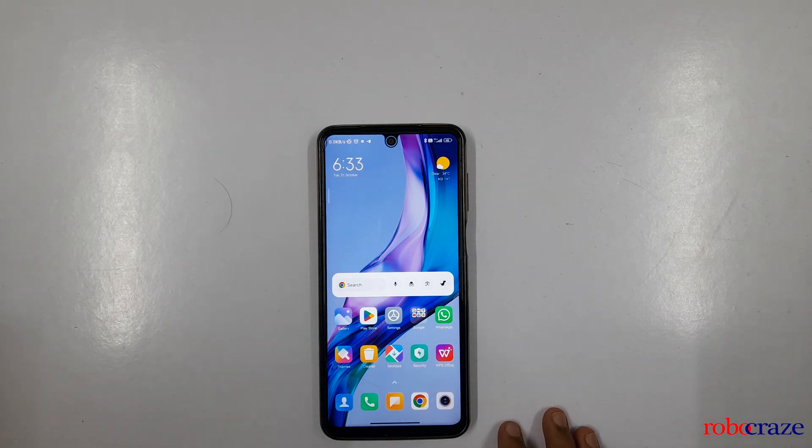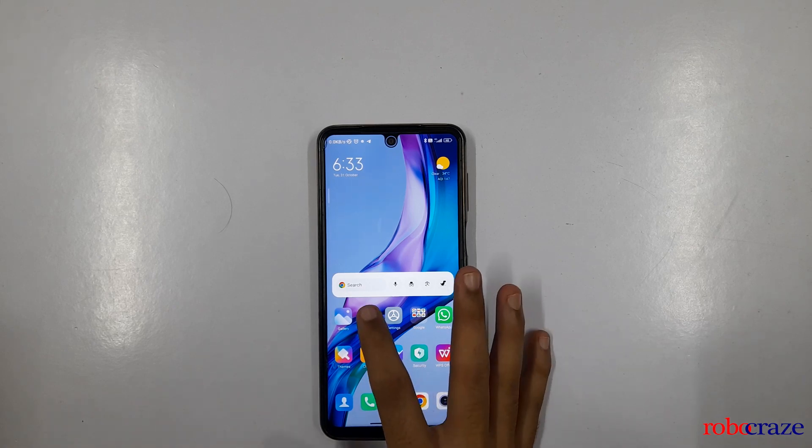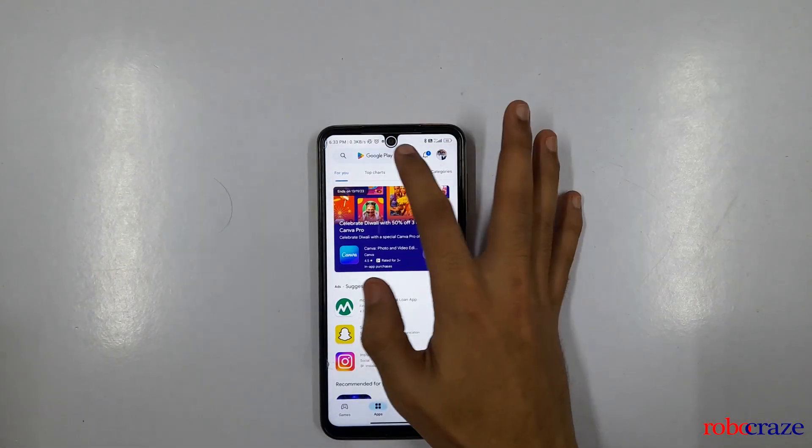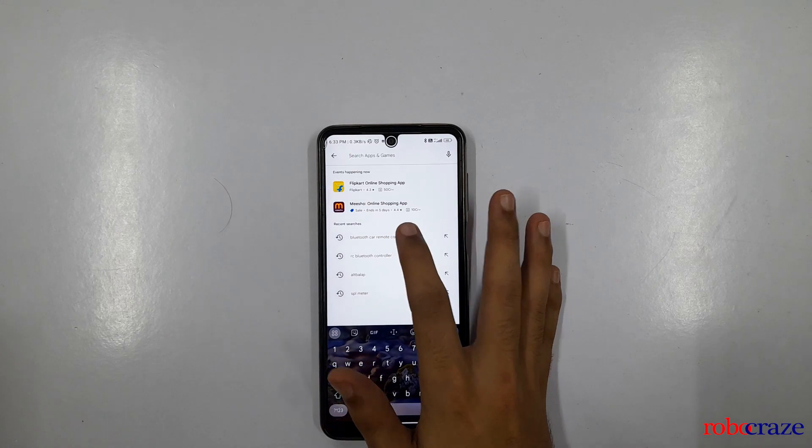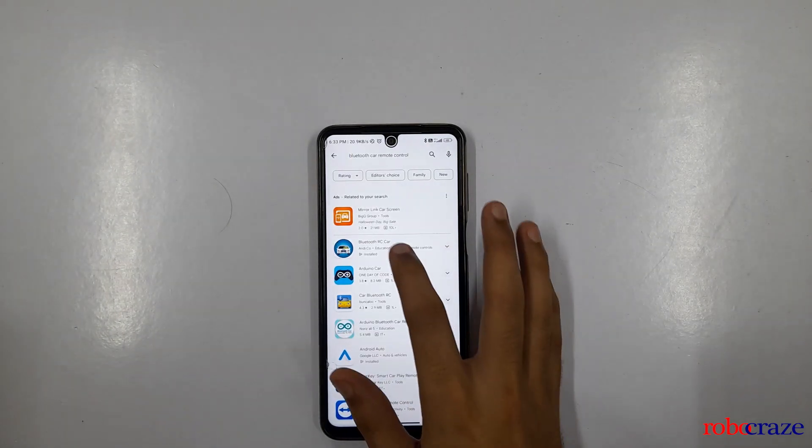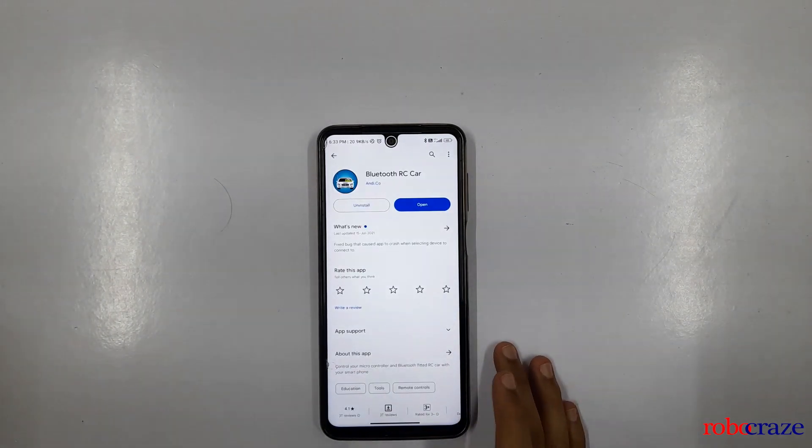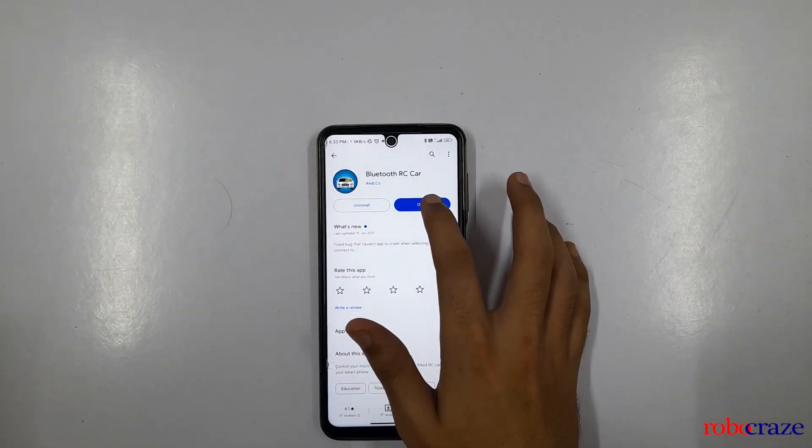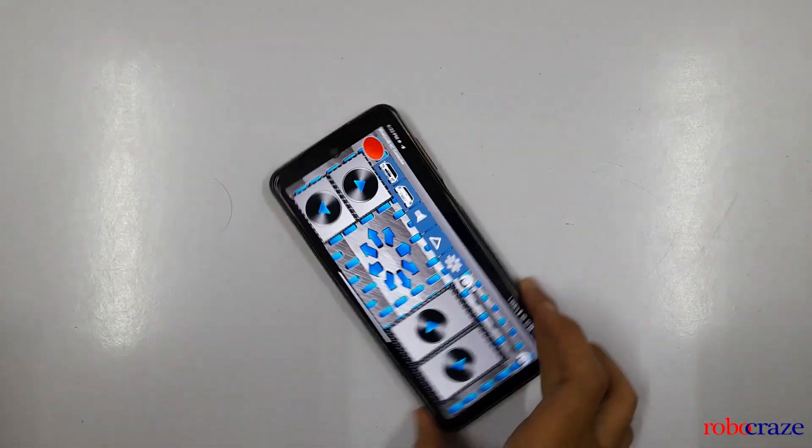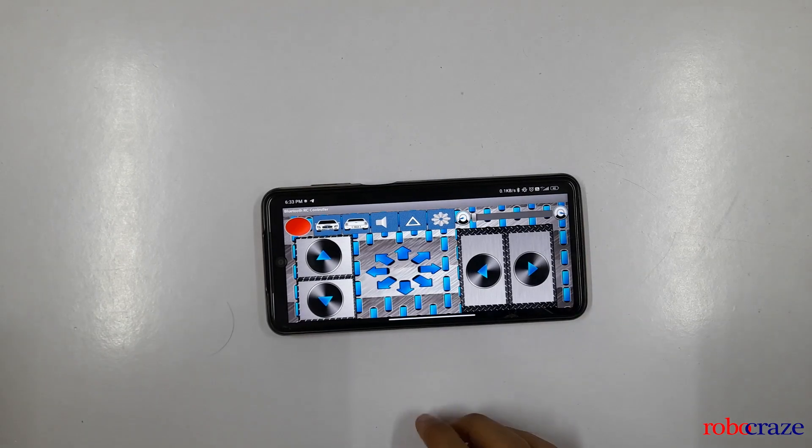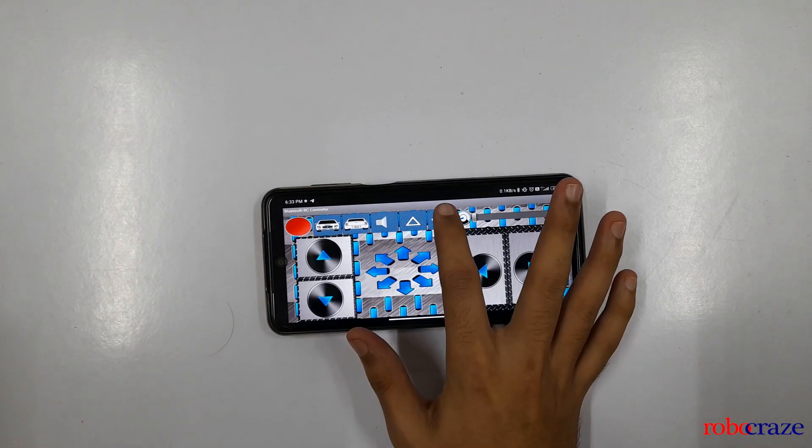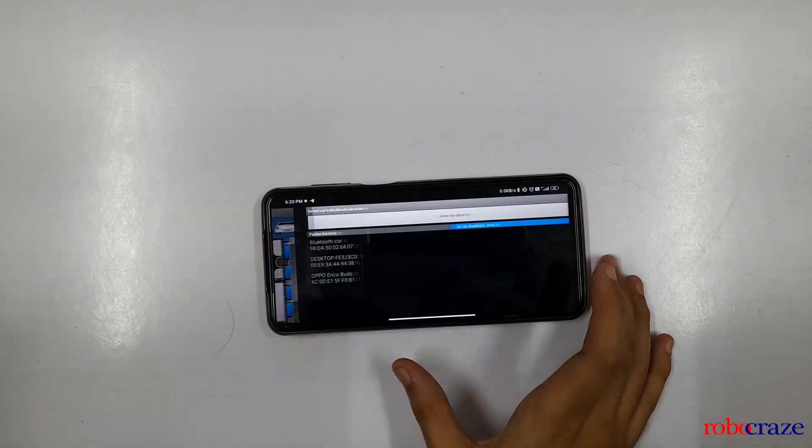As for the demonstration, for the purpose of controlling the car we will be using Bluetooth RC car controlled app which you can easily get in your Play Store. Go to Play Store, search by the name Bluetooth car remote control and you will get the app called Bluetooth RC car. Install and open it. As we have already installed.